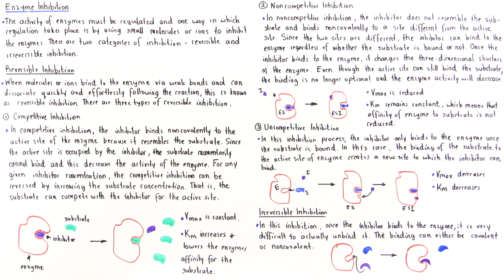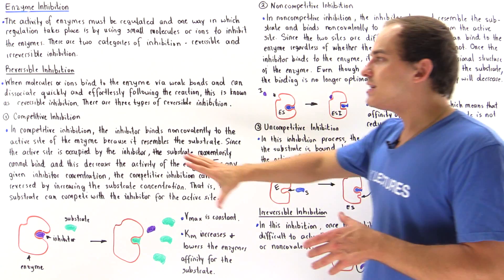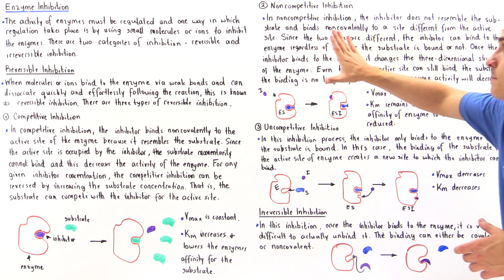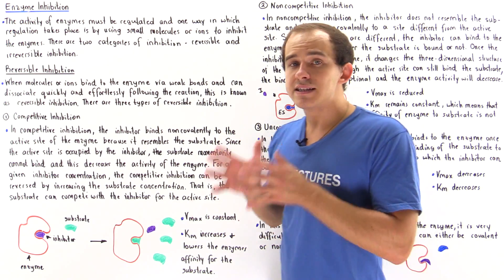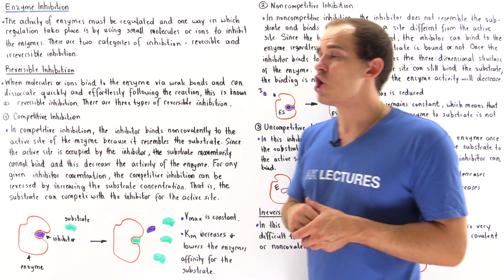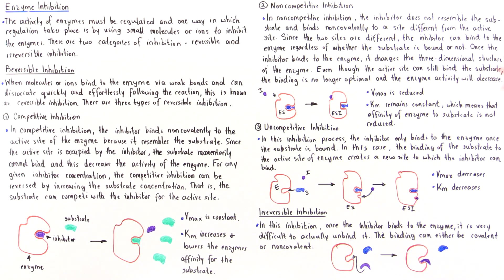Let's move on to our second type of reversible inhibition: non-competitive inhibition. In competitive inhibition, the inhibitor resembles our substrate, but in non-competitive, the inhibitor does not actually resemble our substrate, and that means it does not bind to the active site of the enzyme. Instead, it binds to a completely different location known as the allosteric site. Since the allosteric site and the active site are different, the inhibitor can bind to the enzyme regardless of whether the substrate is actually bound to the enzyme or not.